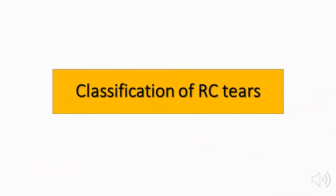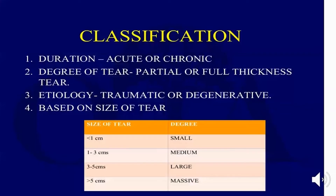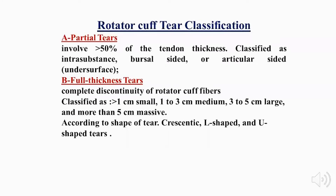Rotator cuff tears can be classified according to duration (acute or chronic), degree (partial or full thickness), and etiology (traumatic or degenerative). Partial tears involve about 50% of the tendon thickness and are classified as intrasubstance, bursal-sided, or articular-sided. Full thickness tears are classified as small (less than 1 cm), medium (1–3 cm), large (3–5 cm), or massive (more than 5 cm).